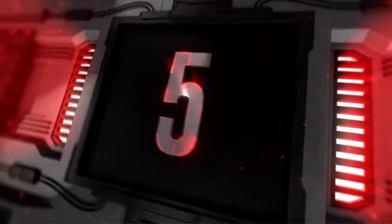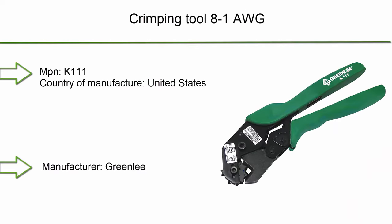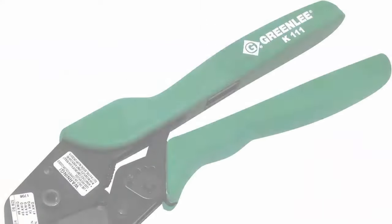Top 5: Crimping Tool 8-1, MPN K-111, Country of Manufacture: United States, Manufacturer: Greenlee.